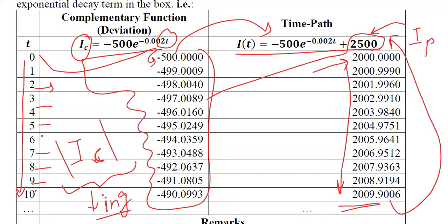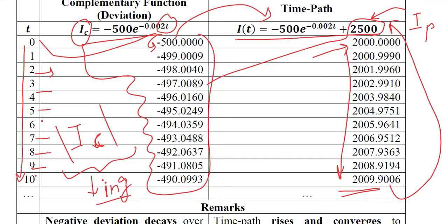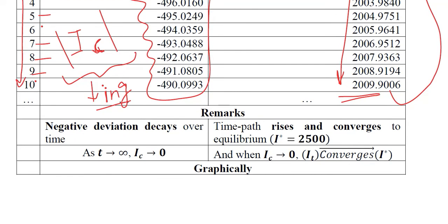So as we go ahead, we will travel more and more and come close to the equilibrium. This is now making sense that the time path is rising and will converge towards the equilibrium, the value of which is 2500. There is a negative deviation because all of these values are negative and they are depicting the deviation. There is a decay over time as the value is declining. As time passes, the deviation will approach zero and when the deviation approaches zero, there will be a convergence of the time path towards the equilibrium.